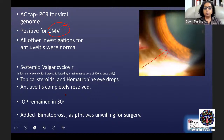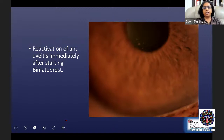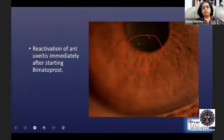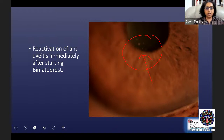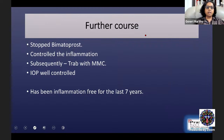She was started on systemic valganciclovir — induction twice daily for 3 weeks followed by a maintenance dose of 900 mg once daily — along with topical steroids and homatropine, and the anterior uveitis completely resolved. But IOP remained in the 30s. The patient was counselled about the need for surgery but was unwilling. Since the eye was quiet, a prostaglandin analogue was added. However, as soon as bimatoprost was started, there was immediate reactivation of the anterior uveitis, demonstrating that prostaglandin analogues can reactivate certain types of uveitis, especially viral uveitis.